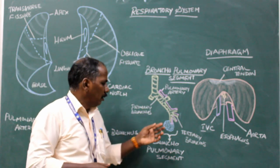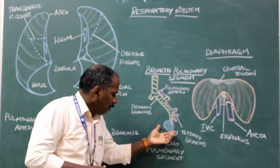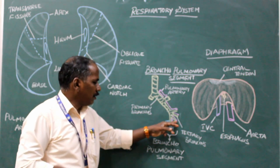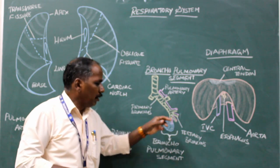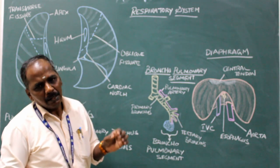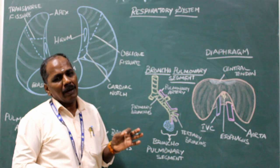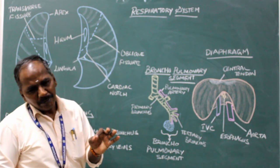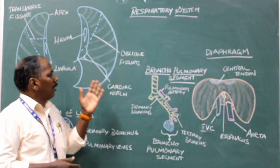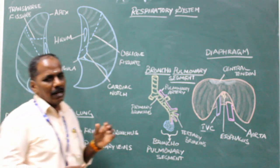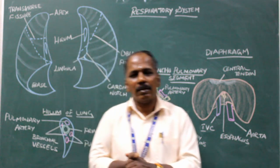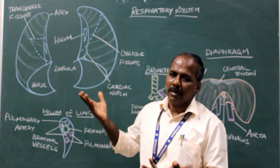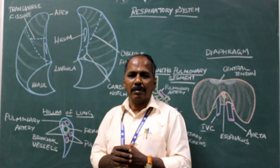The part of the lung which is aerated by the tertiary bronchus and its accompanying branch of the pulmonary artery constitutes a bronchopulmonary segment. The lung is divided into segments: the right lung has 10 bronchopulmonary segments and the left lung also has 10 bronchopulmonary segments.